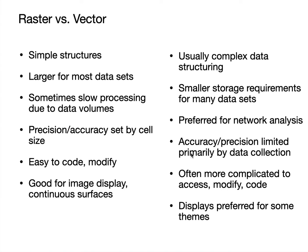Whereas in vector, precision is limited primarily by the data collection method, so you can preserve that accuracy. You can course the vector depending on the size and use of the data, but it's easier to maintain data accuracy inside a vector. Rasters are fairly easy to code and modify because they have such simple structures — just a set of squares. We'll talk about things like run-length coding to compress or speed up raster data sets. Vectors often have a complex structure to get into the geography itself. Finally, rasters are natural for image display and continuous surfaces, whereas vectors are preferred for network or linear themes.